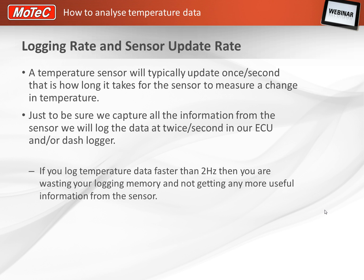A lot of people ask me how fast should I log temperature data? The update rate of a sensor is the time it takes the sensor to convert a temperature change into a voltage, and this is about a second. So logging the data any faster than twice a second in our ECU or dash logger will not give us any more information. To save logging memory, we log these at twice a second only. The general rule of thumb is that we log the data at twice the update rate to make sure we capture all the data.